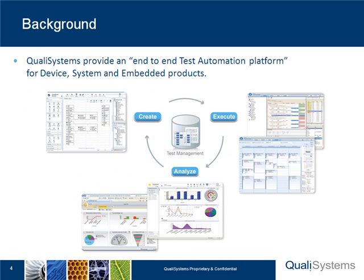Quality Systems provides an end-to-end test automation platform. It's a framework of different applications that are integrated to each other to provide a complete solution. We start from creating tests, executing them, executing in a distributed environment, collecting all that information, and analyzing that information. Everything is concentrated around a central database.